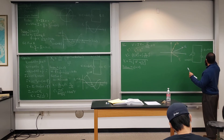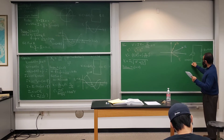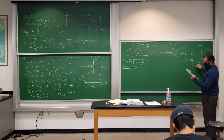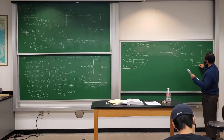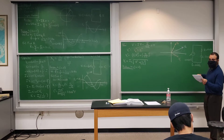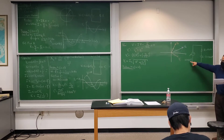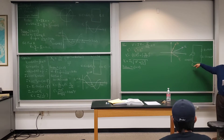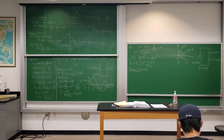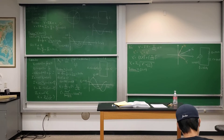We're given 80 nanofarads for capacitance and the frequency is 10 kilohertz. Given the frequency, that indirectly tells us what omega is, because omega is 2 pi times the frequency. The question says: find Vr and Vc, those maximum voltages.